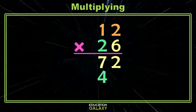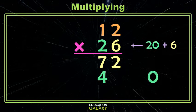Well, remember that our 26 is really 20 plus 6. So when we multiply 2 and 2, we're really multiplying 2 and 20, which is 40. Makes sense? Okay.